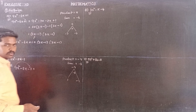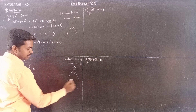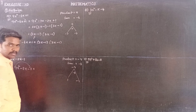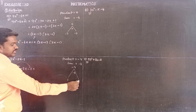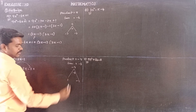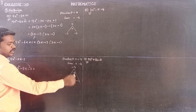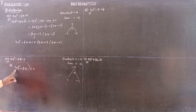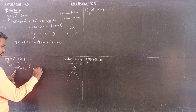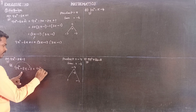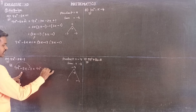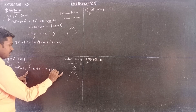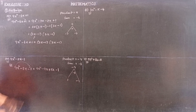The numbers are minus 9 and plus 1: minus 9 times 1 is minus 9, and minus 9 plus 1 is minus 8. So we split the middle term as minus 9x plus 1x minus 1.